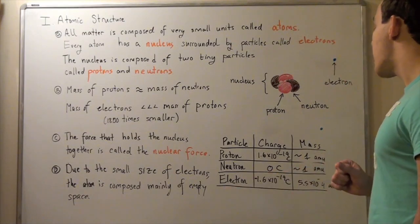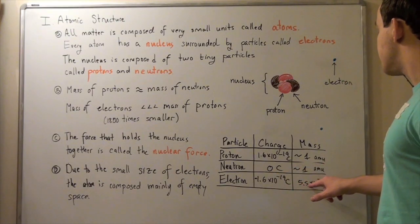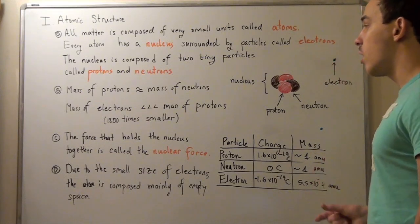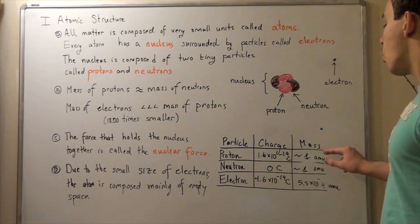But an electron has a mass of 5.5 times 10 to negative 4 amu. That's much smaller than that of a proton or a neutron.